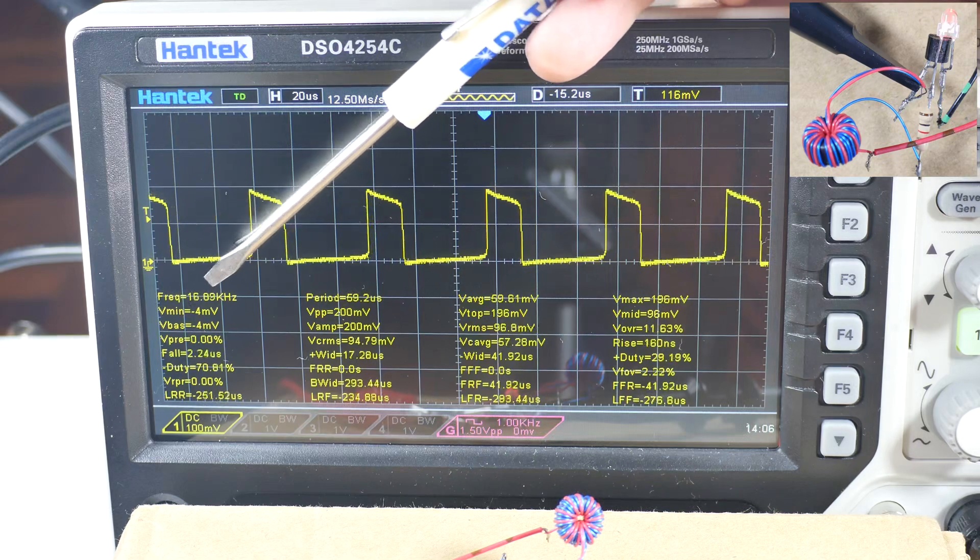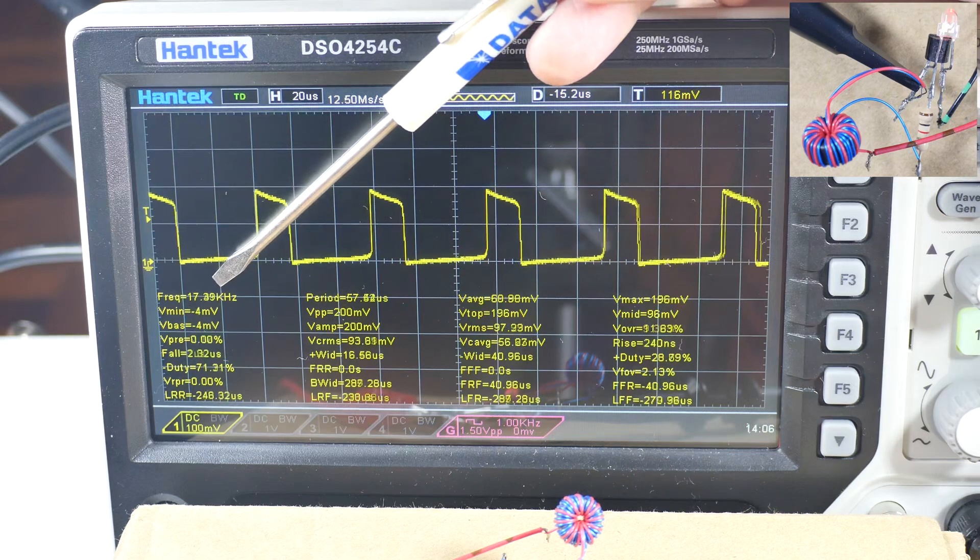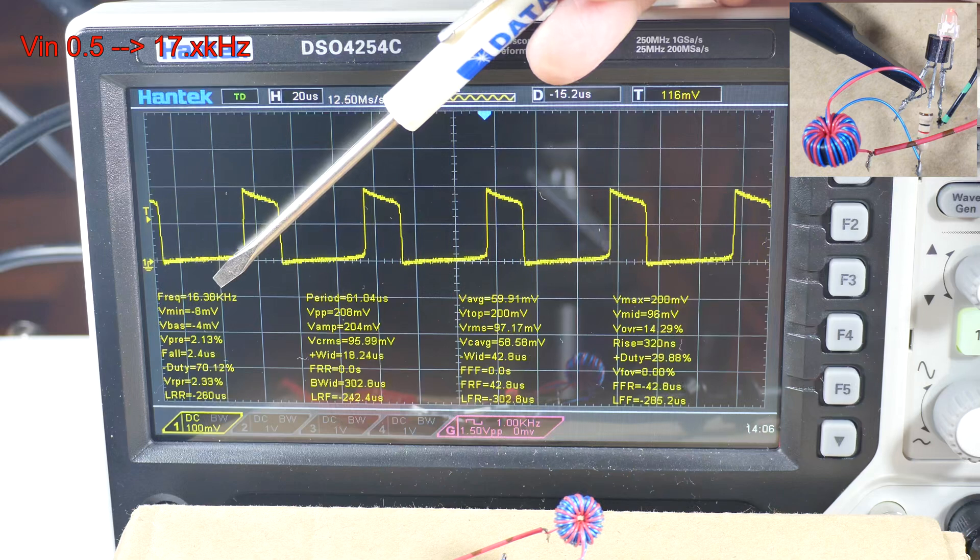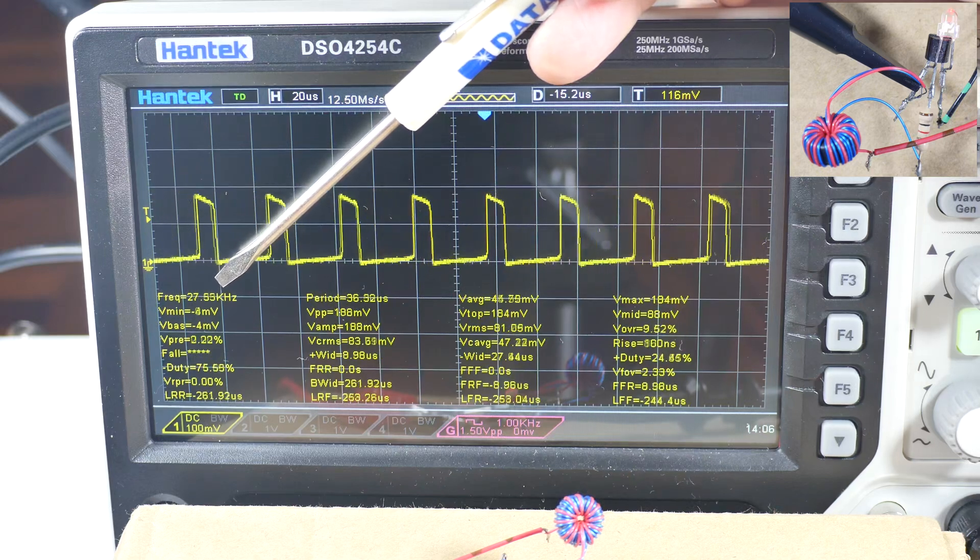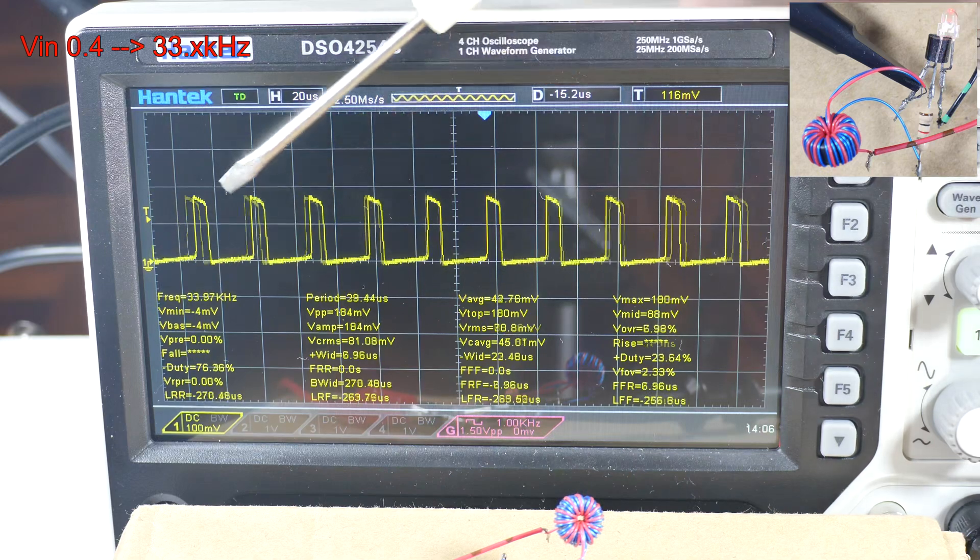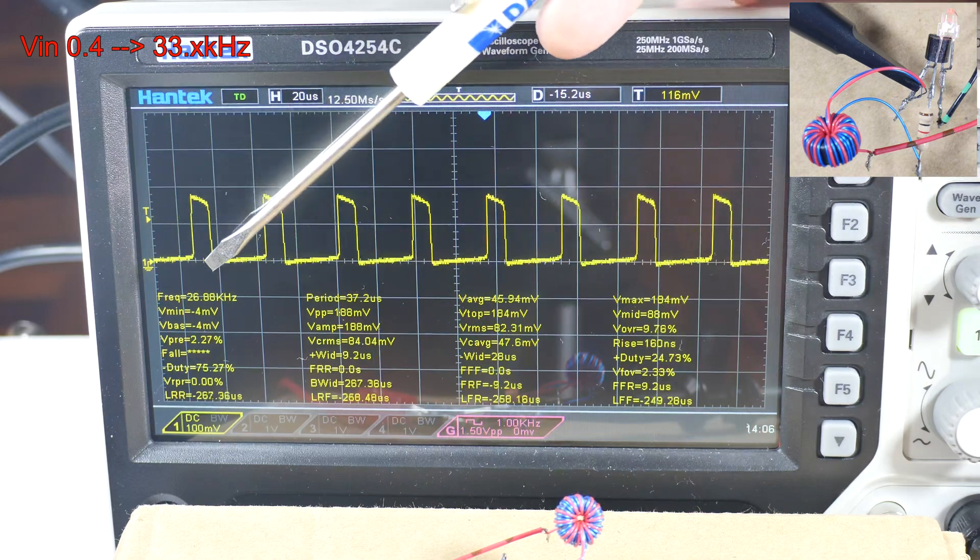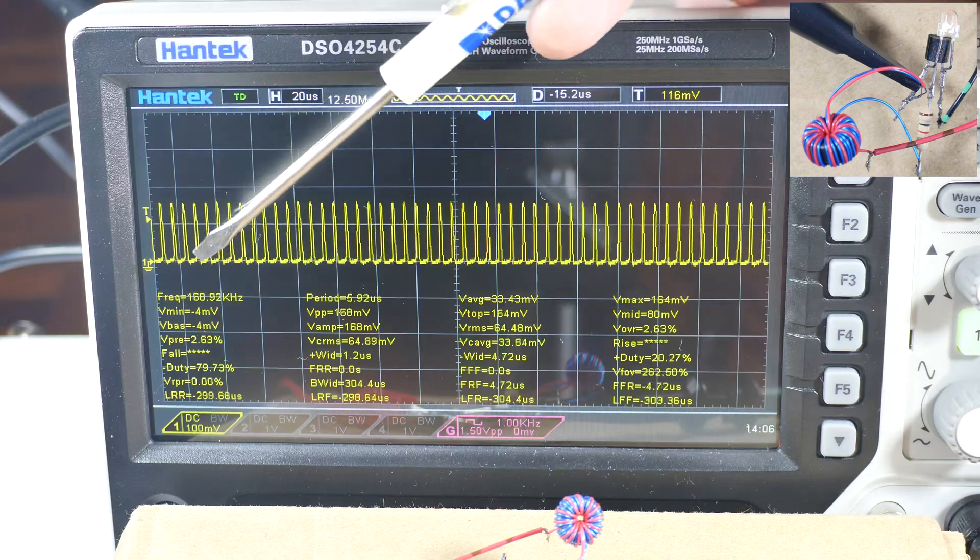That's 0.5 volts at 17 kilohertz. And a little bit lower. 0.4, 33 kilohertz, but it's starting to get unstable. 0.3.